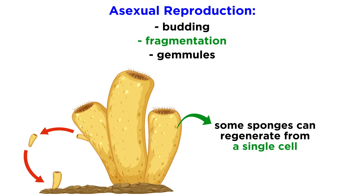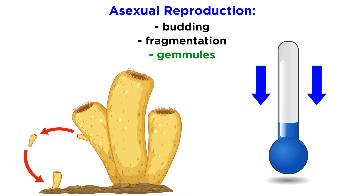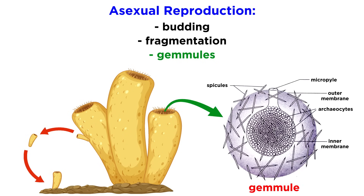Not all sponge cells, and not all sponge species, can regenerate from a single cell. The third method of asexual reproduction is through gemmules. When environmental conditions become less hospitable — like if temperatures drop — many freshwater species and a few marine ones produce gemmules, which are like tiny survival pods of unspecialized cells that can remain dormant until conditions improve. Then they either form completely new sponges or recolonize the skeletons of their dead parents.